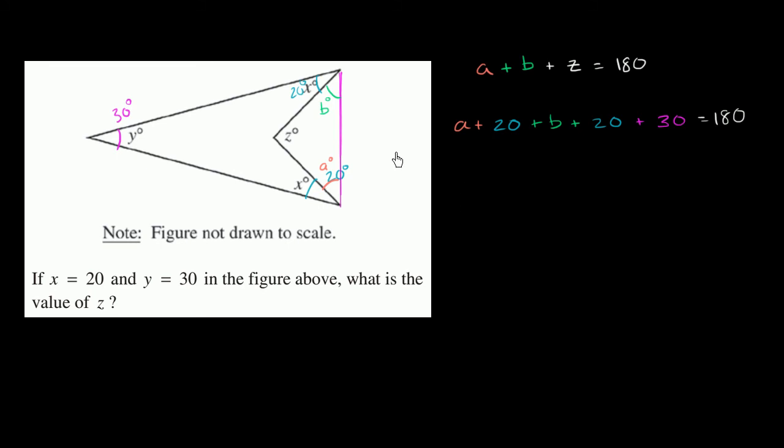So we get a plus b, and then we have 20 plus 20 plus 30. So 20 plus 20 is 40, plus 30 is 70. So plus 70 equals 180. Subtract 70 from both sides, you get a plus b equals 110.